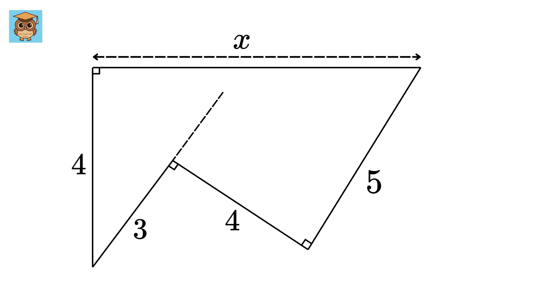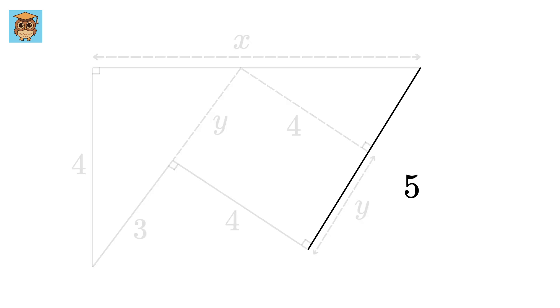As a first step, we can extend this line to meet this horizontal line, and let us label it as Y. Let us draw a line which is parallel to this line, such that this is also a right angle. So this length will be 4, and this length will be the same as Y. Now since this is 5, so this will be 5 minus Y.